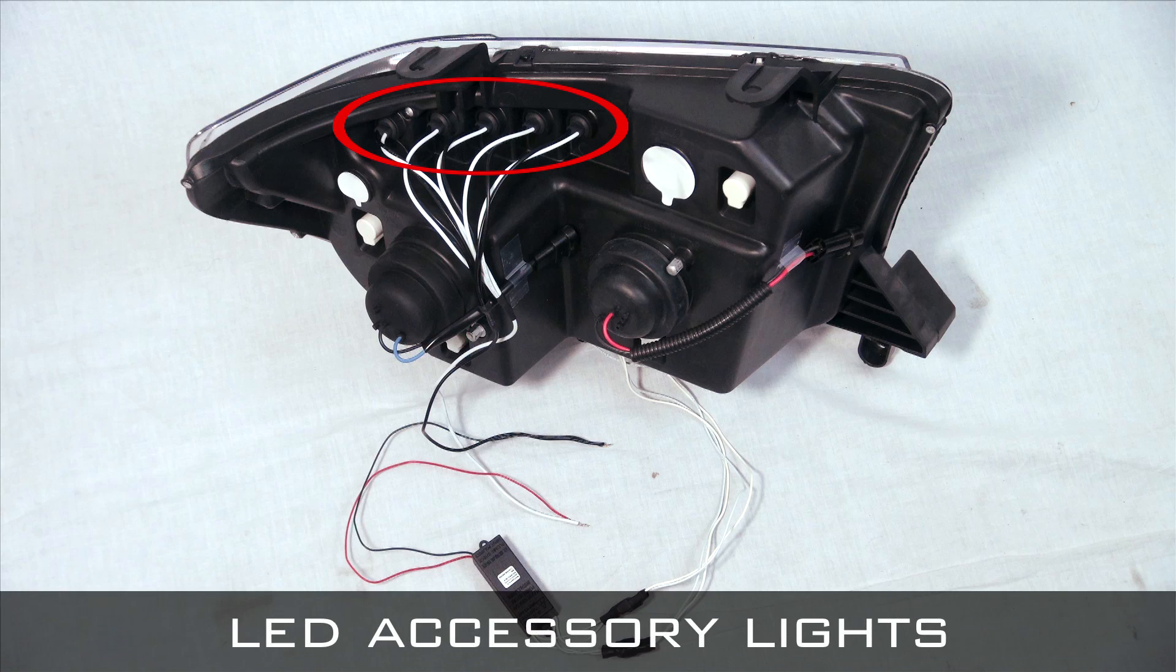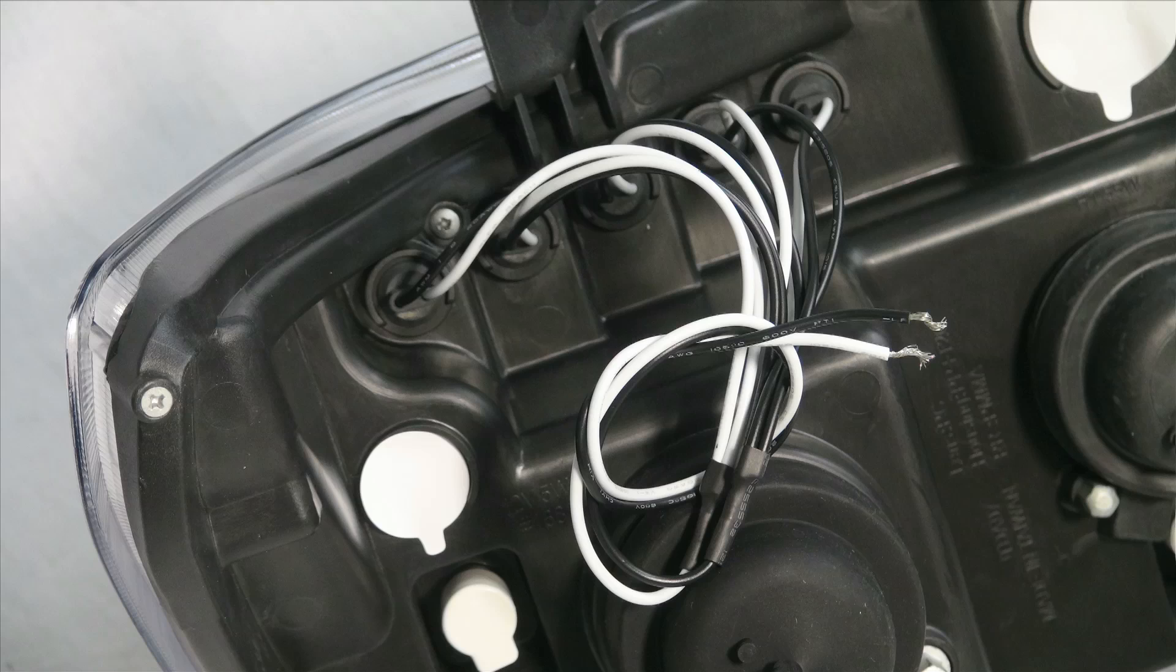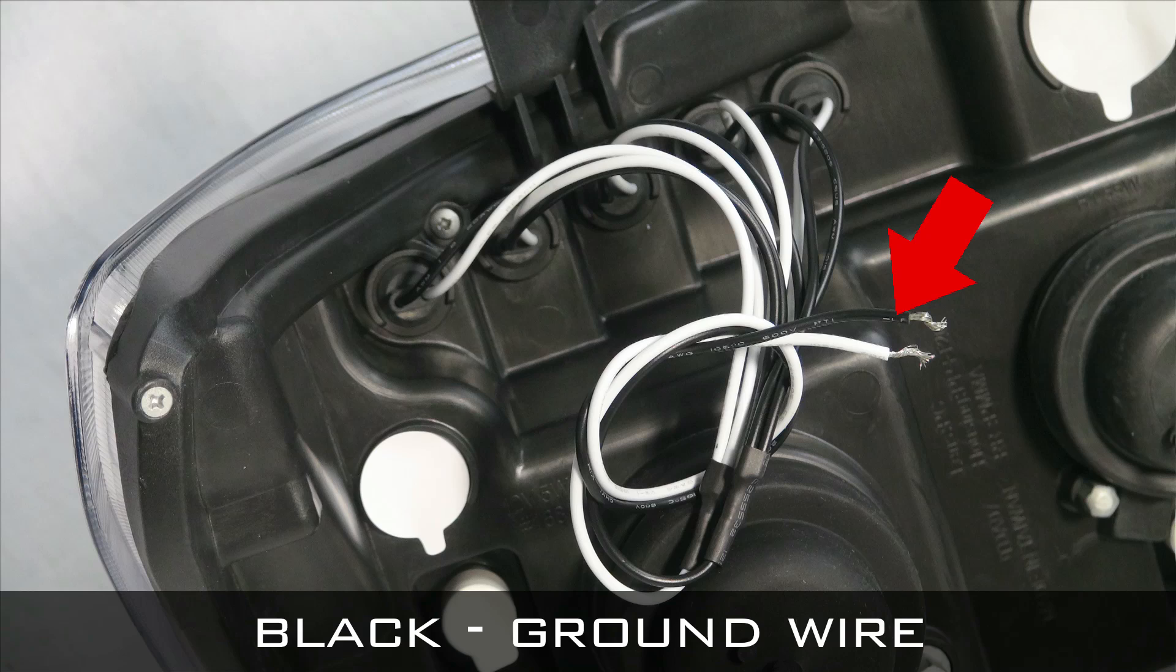This is the LED accessory assembly. The black wire is designated as the ground. This ground wire can be attached to a chassis ground and or to a light socket ground wire.